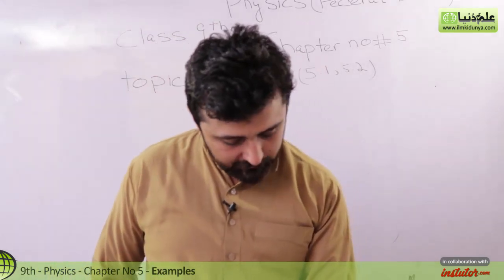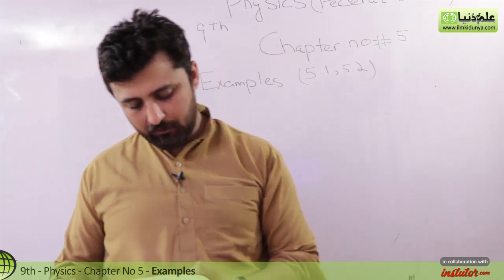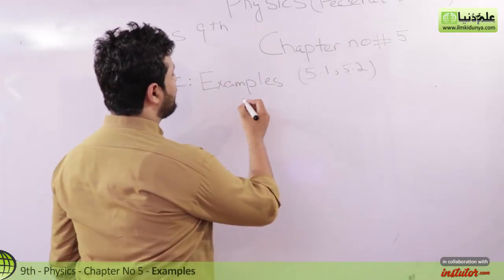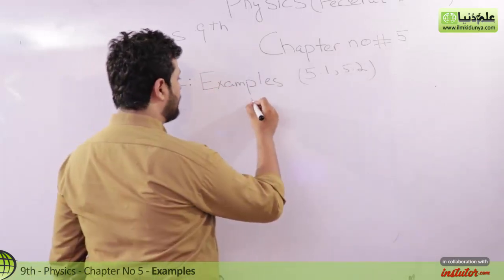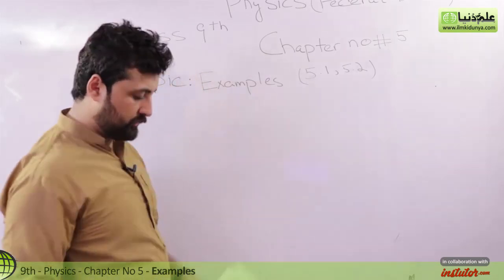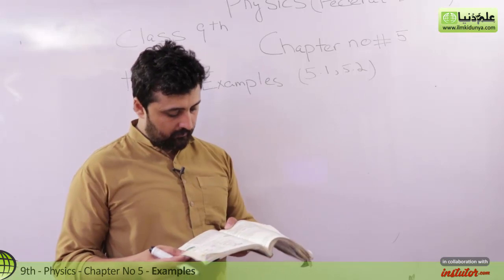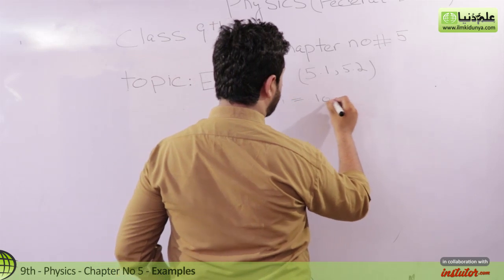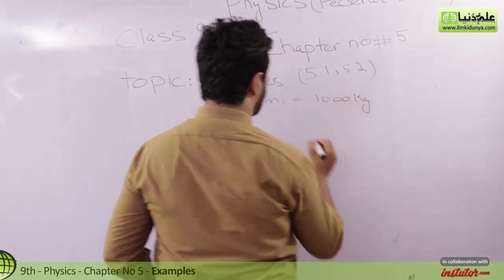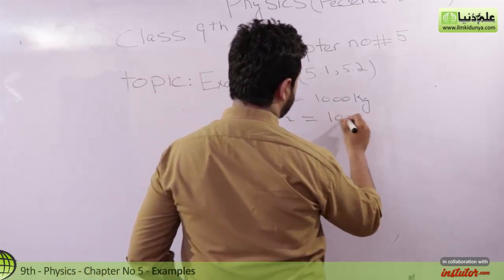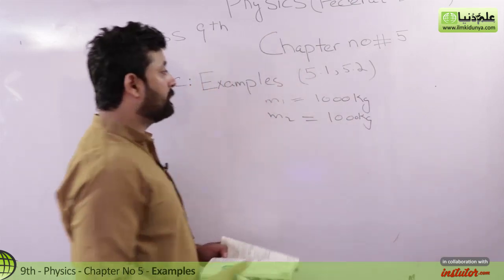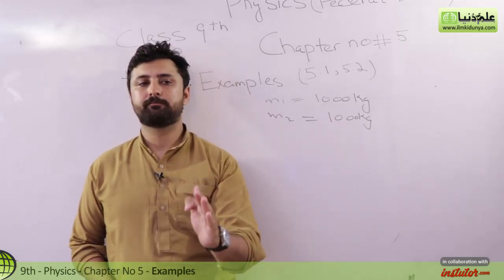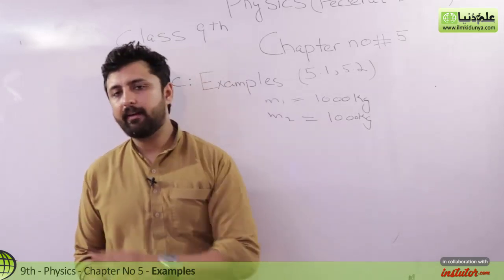Two lead spheres, each has a mass of 1000 kg. It means there are two spheres. One body has mass m1, 1000 kg. One body has mass m2, 1000 kg. Okay, now we have a numerical to solve. If you write the given and put a formula, numerical solve.